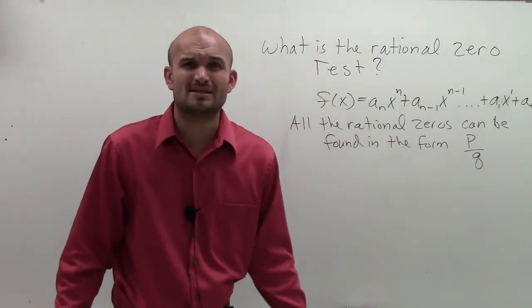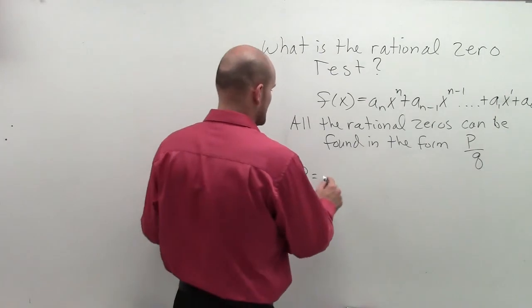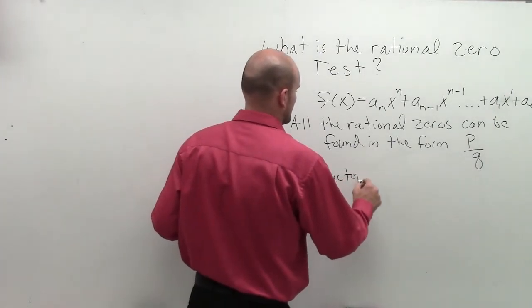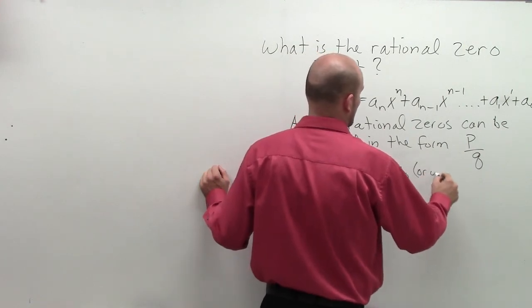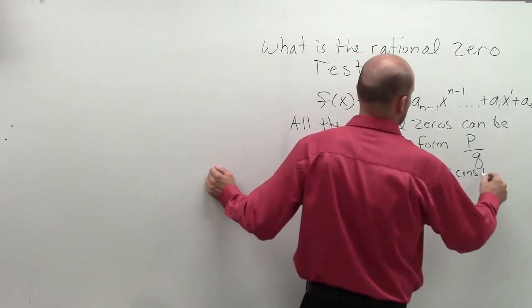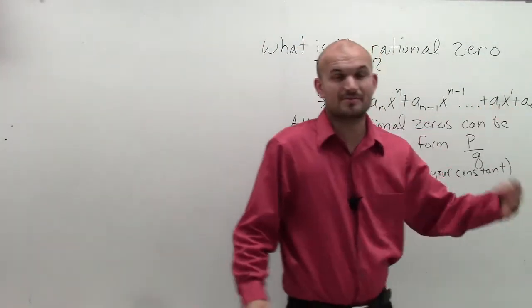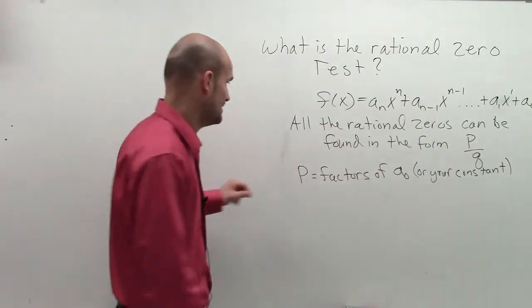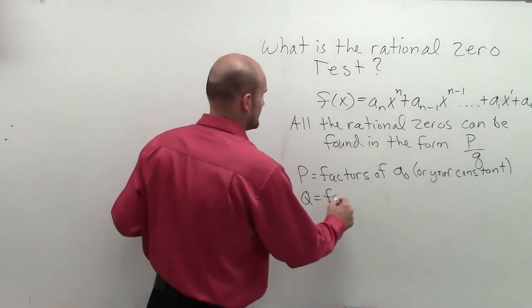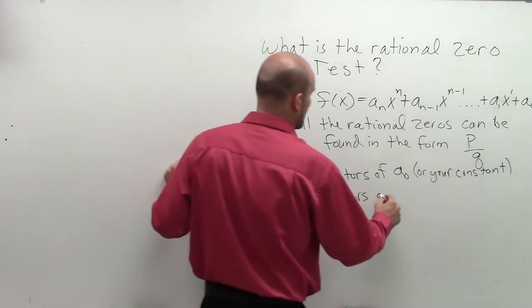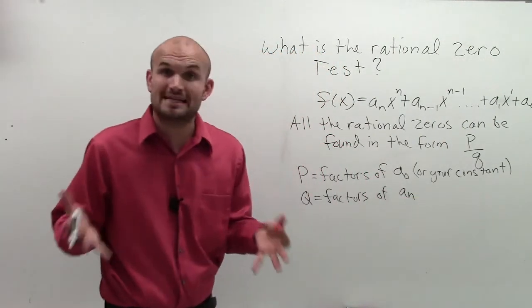So then you say, what's p over q? p is going to represent the factors of a_0, or your constant. So that would be a_0, your last number, your constant. And then q represents your factors of a_n, which is going to be your leading coefficient.